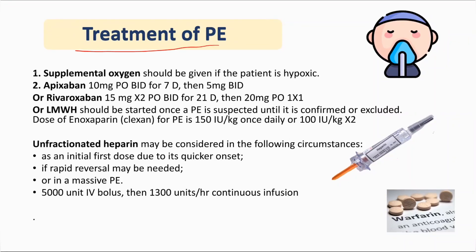Treatment of pulmonary embolism begins with oxygen if the patient is hypoxic. If the patient is stable, you give low molecular weight heparin, or novel anticoagulants such as apixaban or rivaroxaban. Apixaban is given as 10 mg orally twice daily for 7 days, then 5 mg twice daily. These novel anticoagulants do not require frequent INR monitoring.